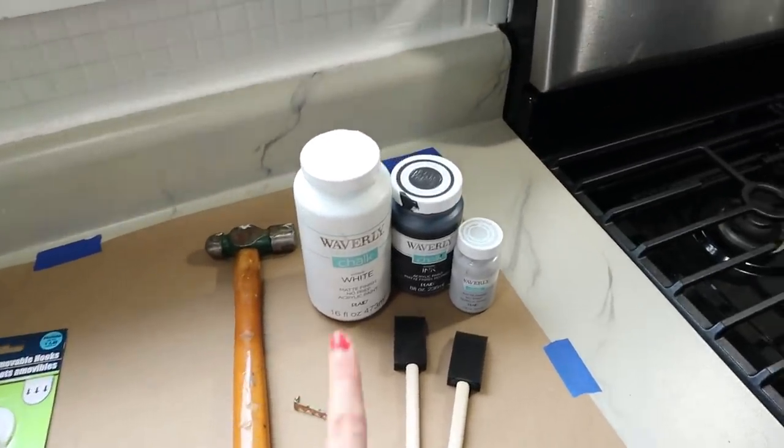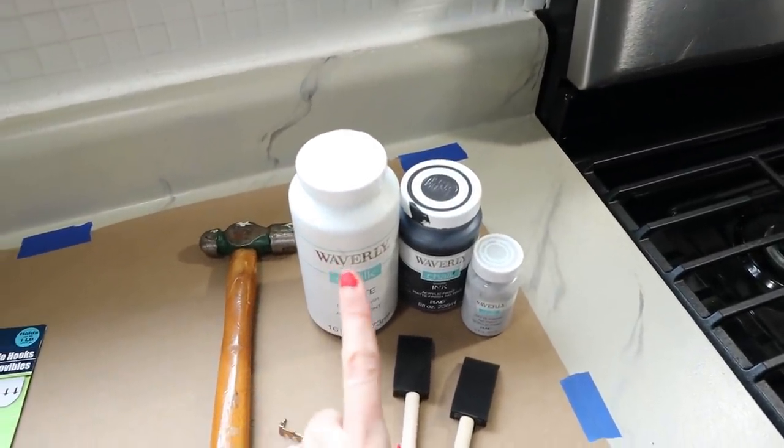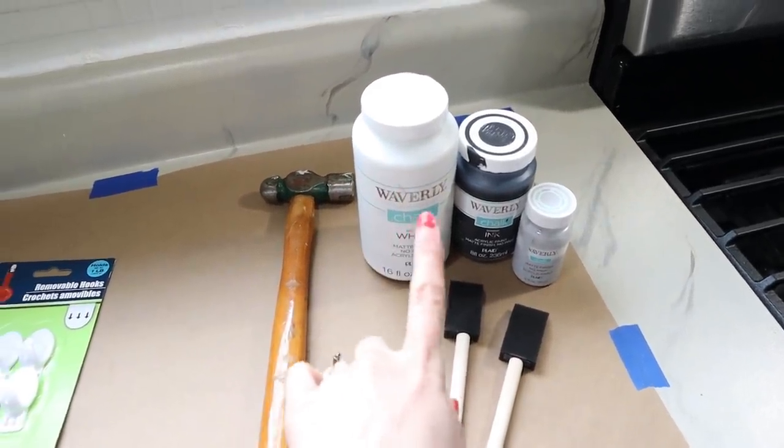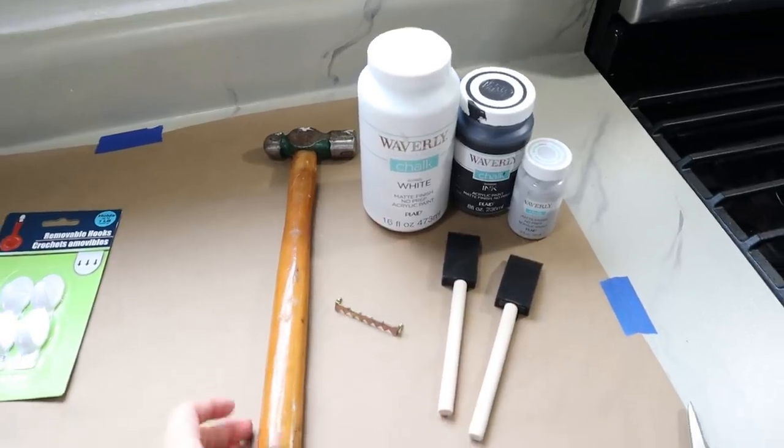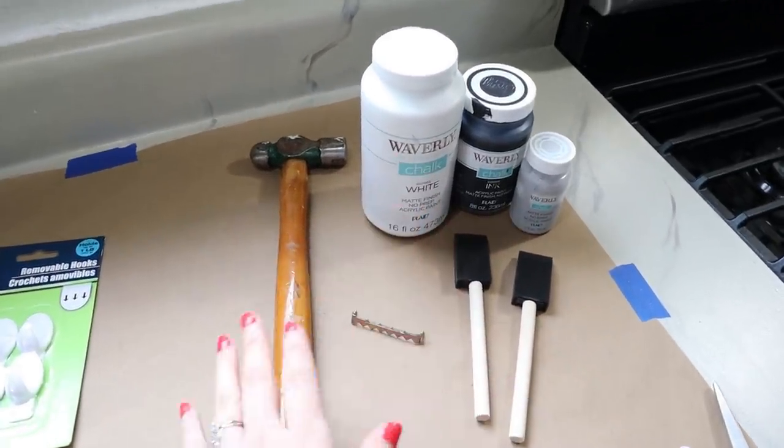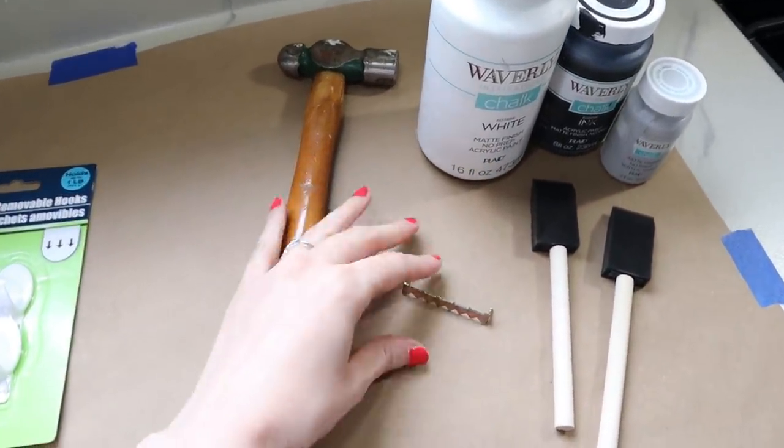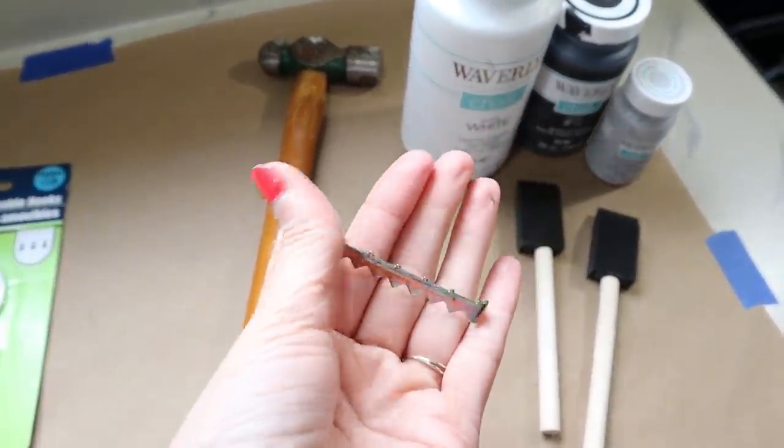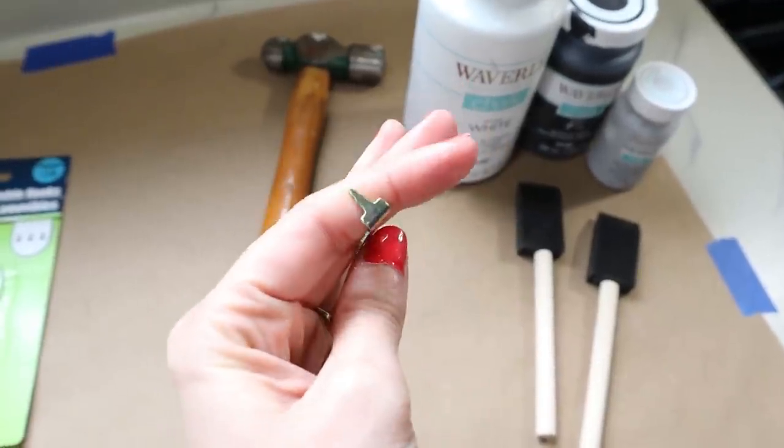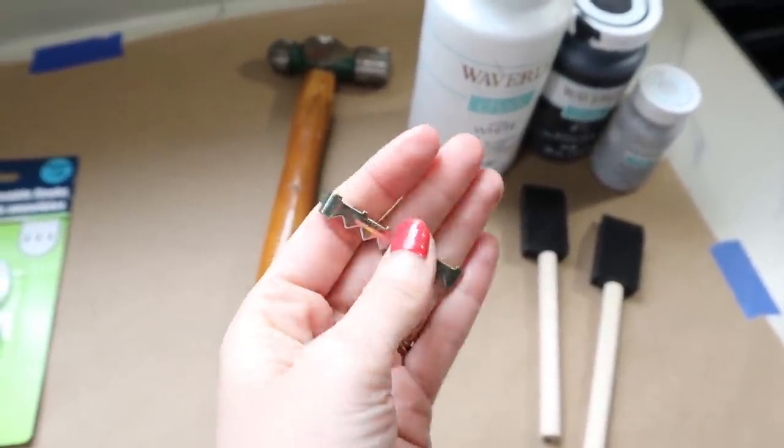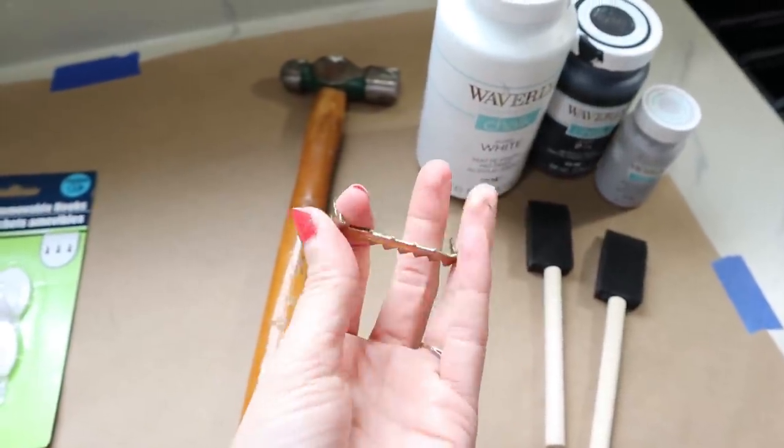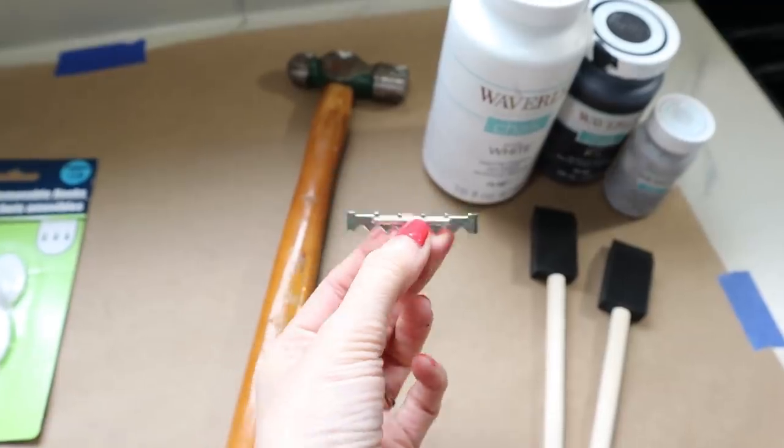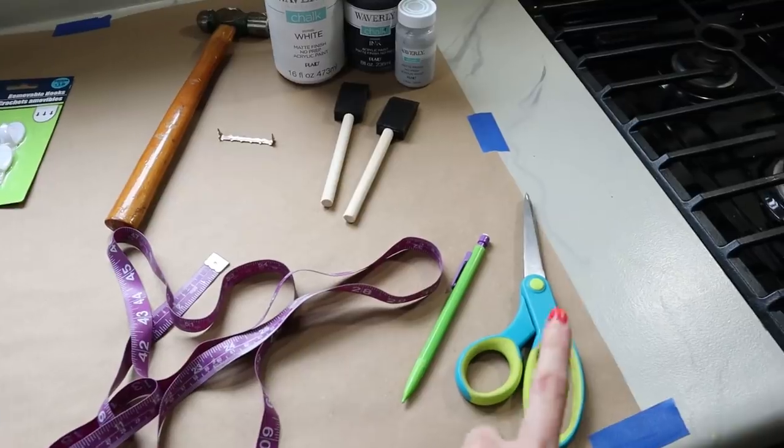For supplies here I have some chalk paint in white, black, and gray and some foam paint brushes. We're going to paint it white so I grabbed a couple to distress the board with. I also have a hammer and these are sawtooth picture hangers that are in my Amazon favorites store and I'll link that below. A lot of people ask how I hang my signs and I always use these. They're really easy, you just hammer them in.